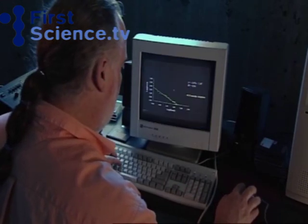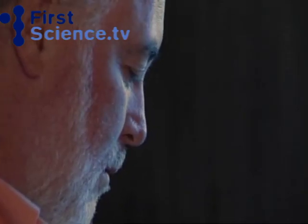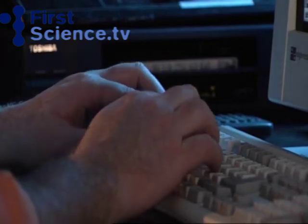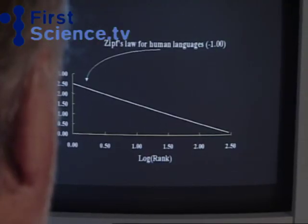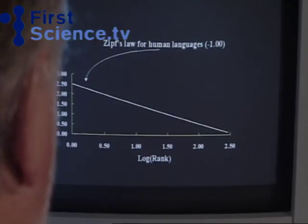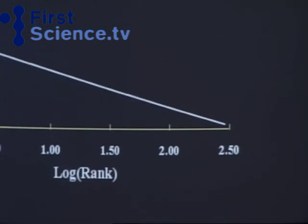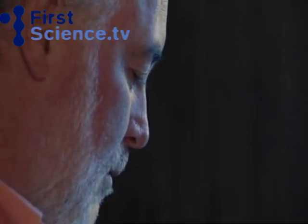The system produces a series of graphs, showing the pattern for single sounds, then sequences of two sounds, then three. This is the graph for single sounds in English. The downward slope shows the sounds could contain information.